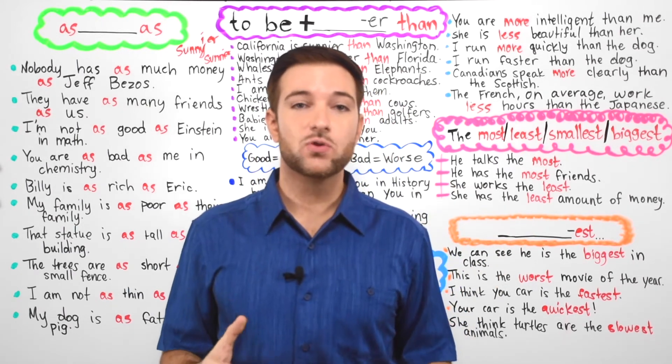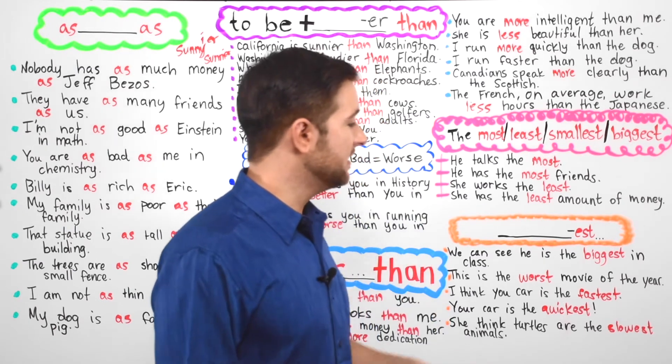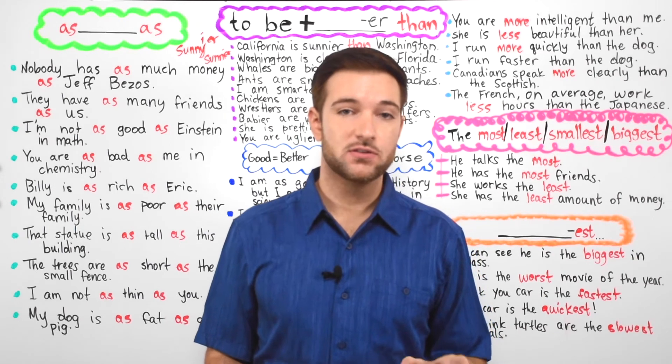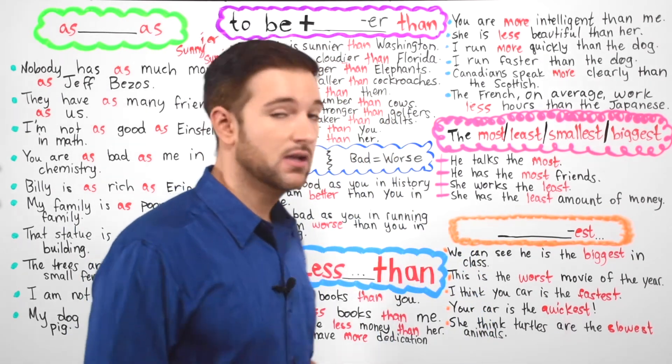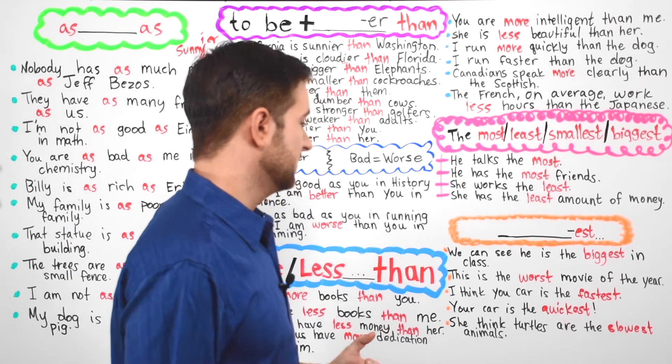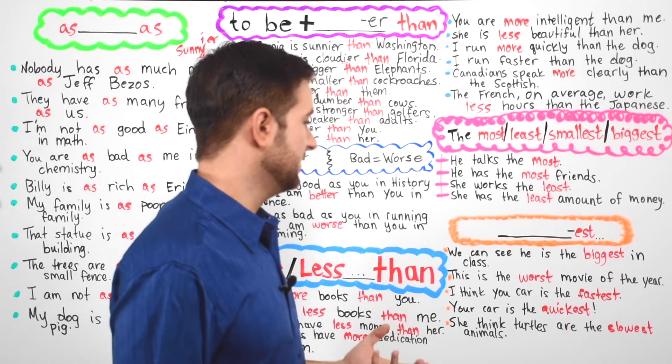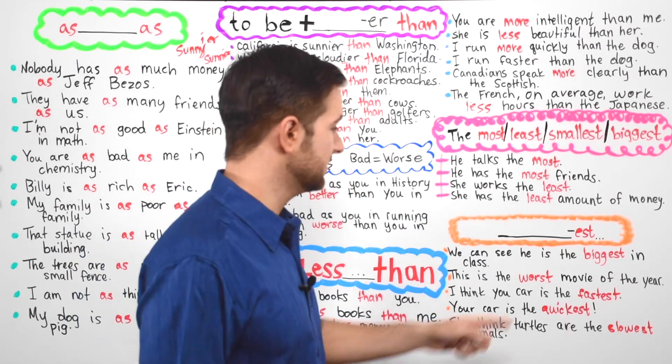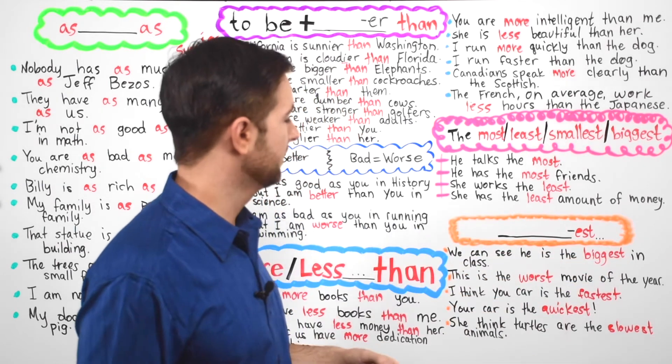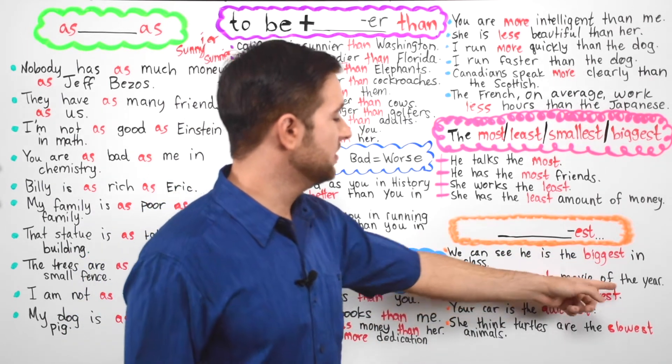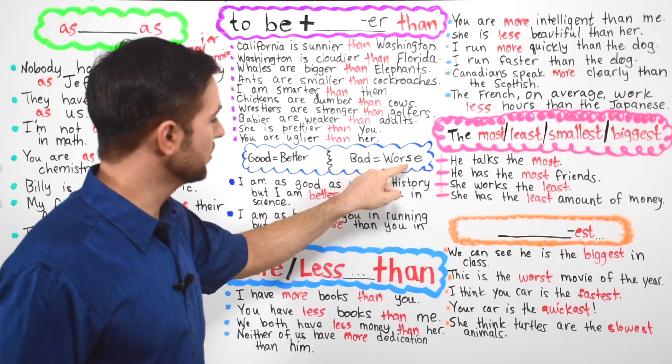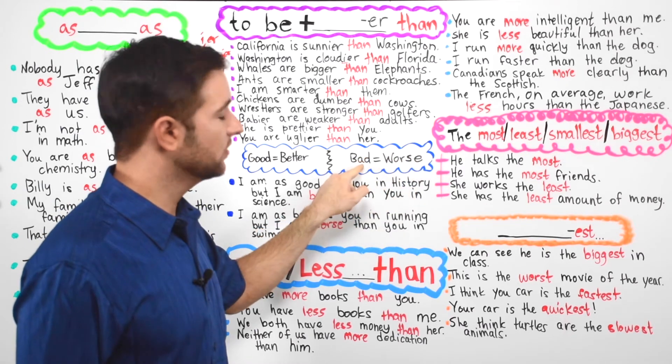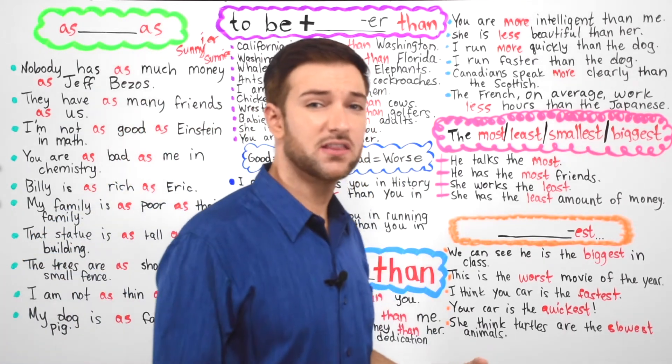In our next examples, we have to add the word EST to the end of the adjective. This will also alter the meaning. So let's go ahead and look at the examples and you'll notice the difference. We can see that he is the biggest in his class or in class. So here you can see that he is the biggest EST coming from the word big. This is the worst movie of the year. Notice worst comes from worse. We take the E and we have worst, which comes from the word bad.